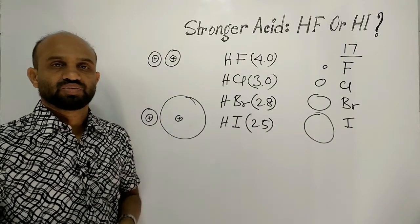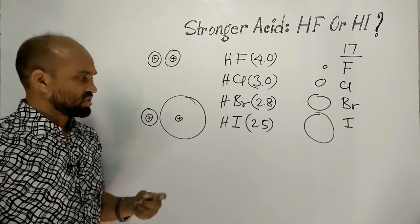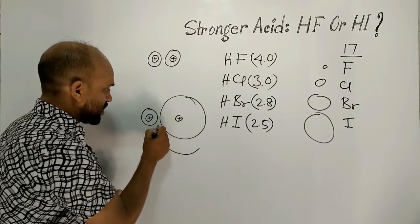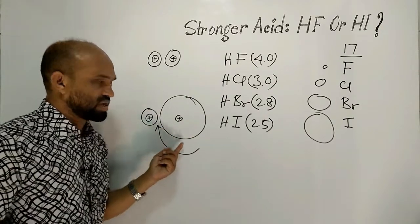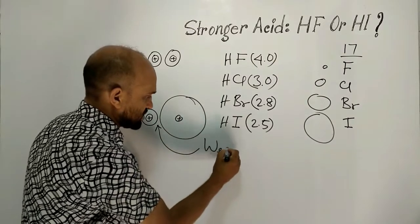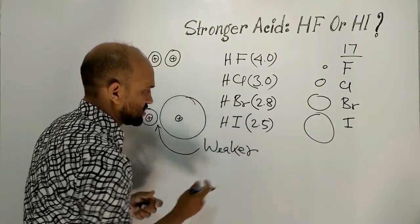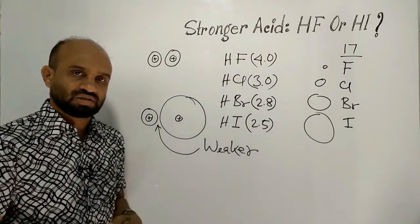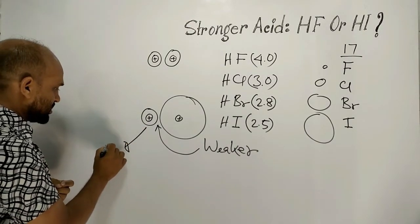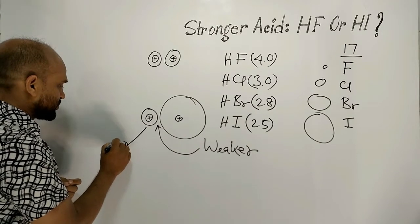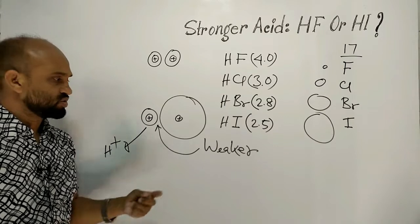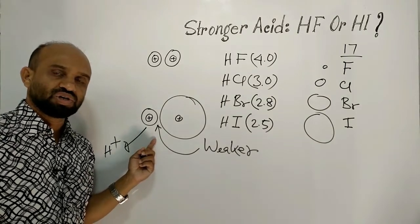Iodine is bigger in size compared to fluorine. Because of this bigger size, the bond between hydrogen and iodine becomes weaker. And as a result, from hydroiodic acid, hydrogen gets freed as a proton easily because of the weaker bond.